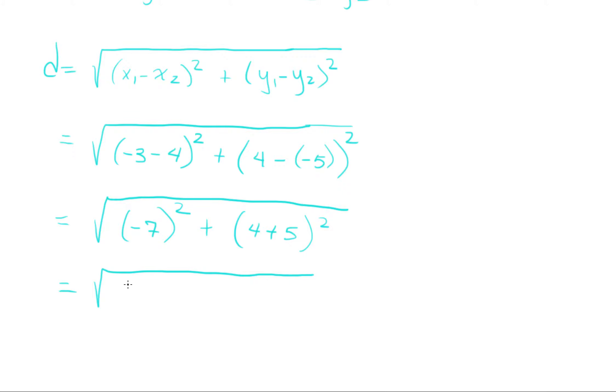−7 squared is what? Well, it's not 14, and it's not −14 either. −7 squared is −7 times −7, which makes positive 49.